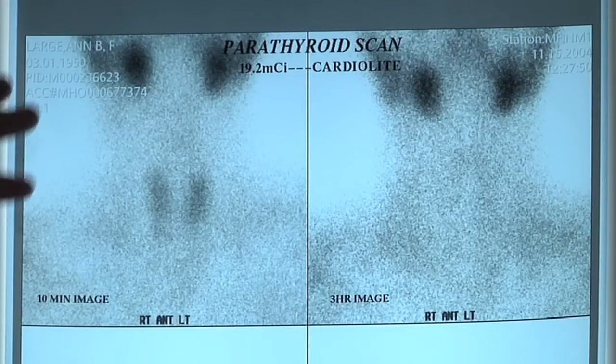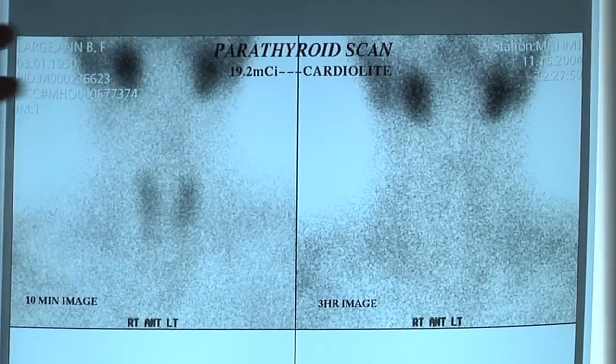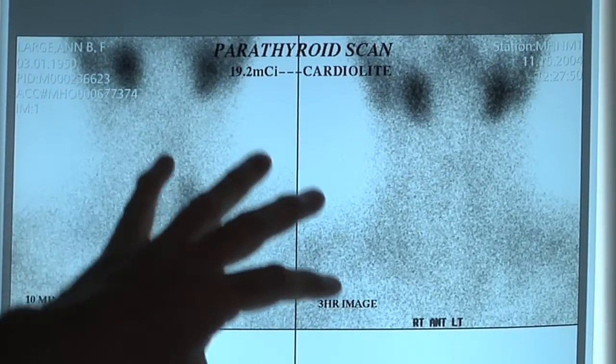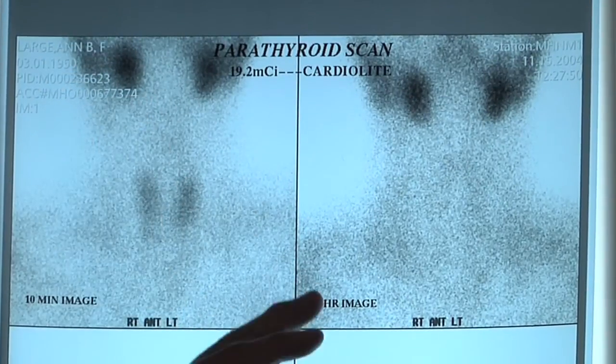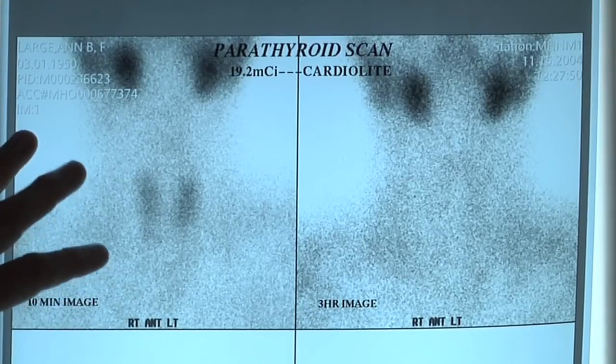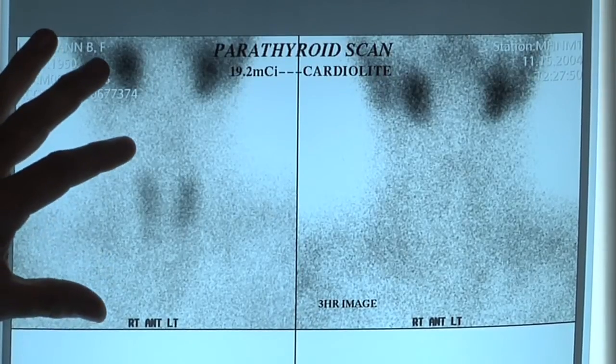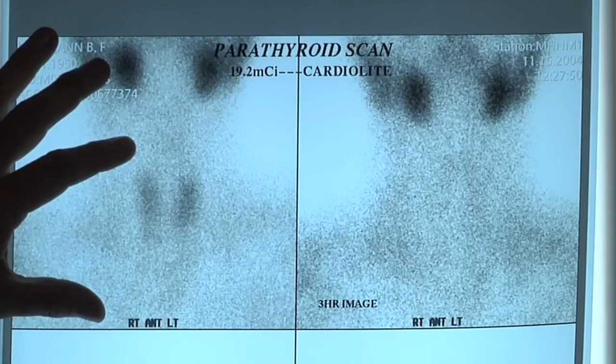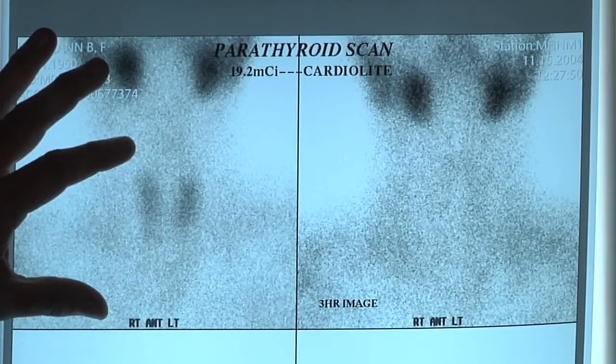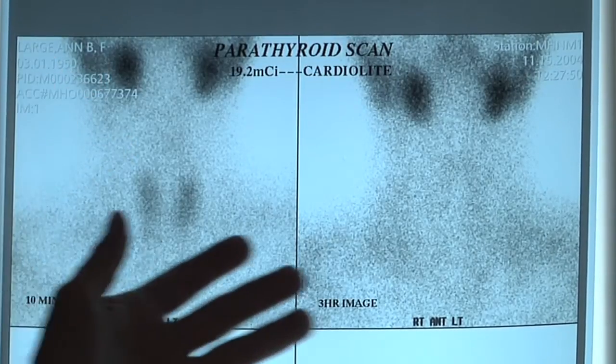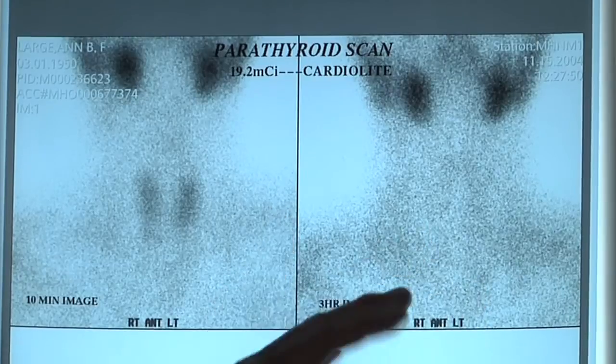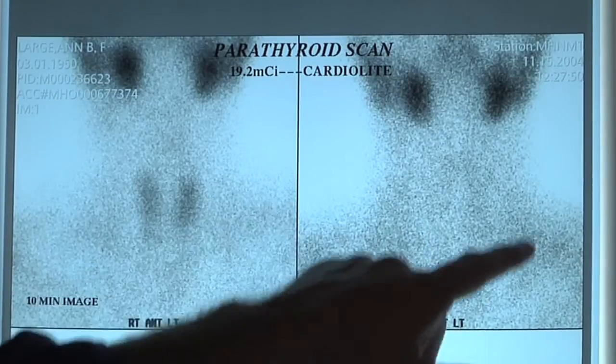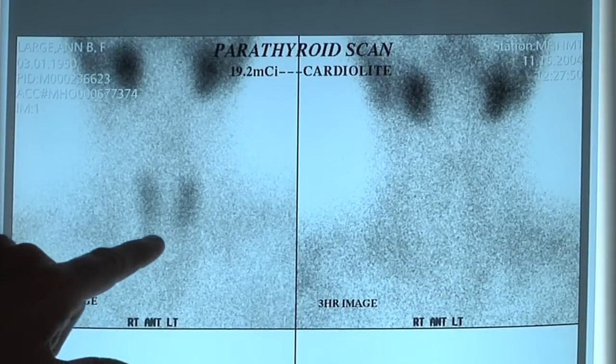The first example we have is this scan right here. The scan should be very clean, crisp, and in focus. This particular patient came to us after already having a failed parathyroid operation. They had an operation that took several hours, didn't find the parathyroid tumor, and this is the scan that she had prior to her first operation. Notice it's blurry. It's not in focus. You can't even really see the thyroid gland.